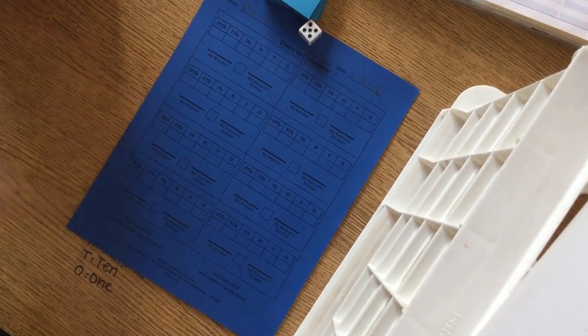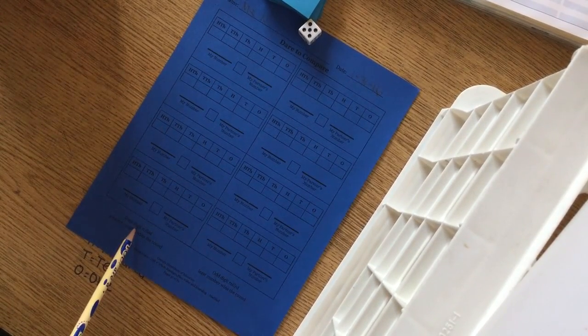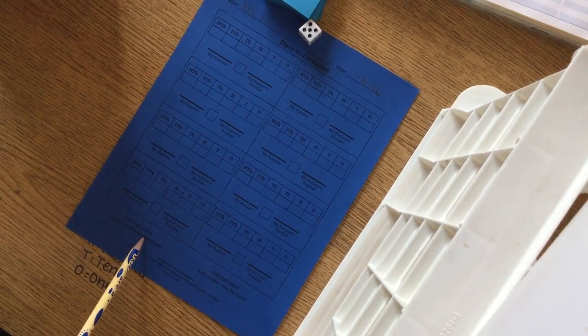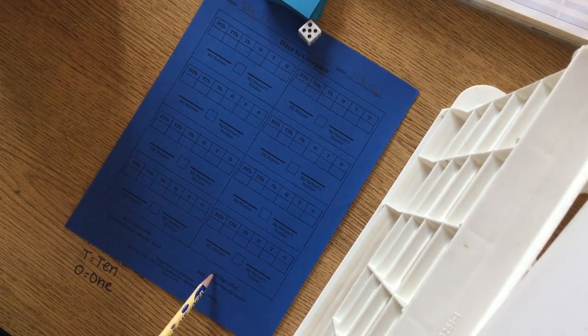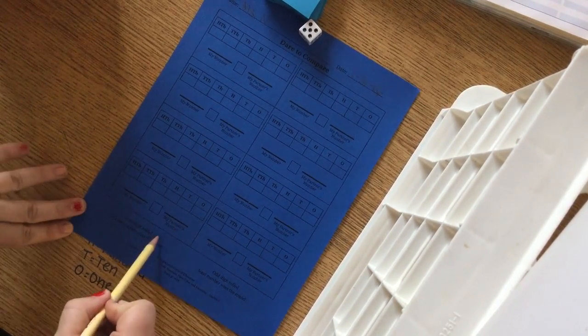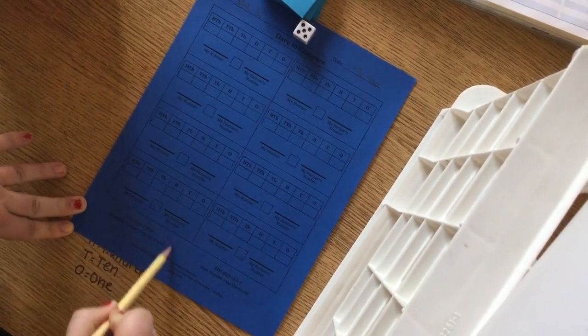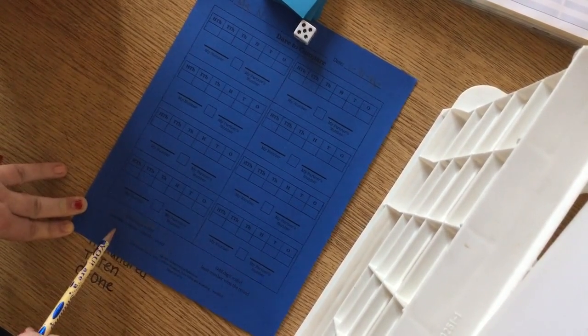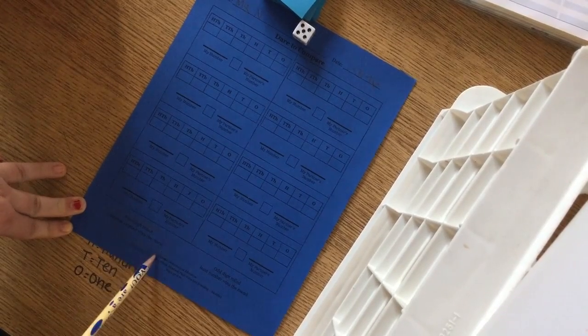So I want to think, is that even or odd? Right here it says even digit rolled. Here it says odd digit rolled. So since we got even digit, we circle it. So you and your partner are going to look for the greatest number wins the round.